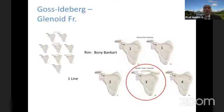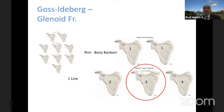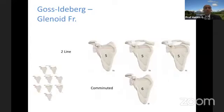Ideberg came and classified the actual glenoid fractures. Type 1 is a bony Bankart, either anterior or posterior. Types 2, 3, and 4 are single-line fractures. Type 3 is the most tricky to approach — not necessarily the commonest, but the most challenging. Type 2 is common and easier to operate, similar to type 4. Type 5 involves two fracture lines going into the glenoid. Type 6 is the comminuted pattern.